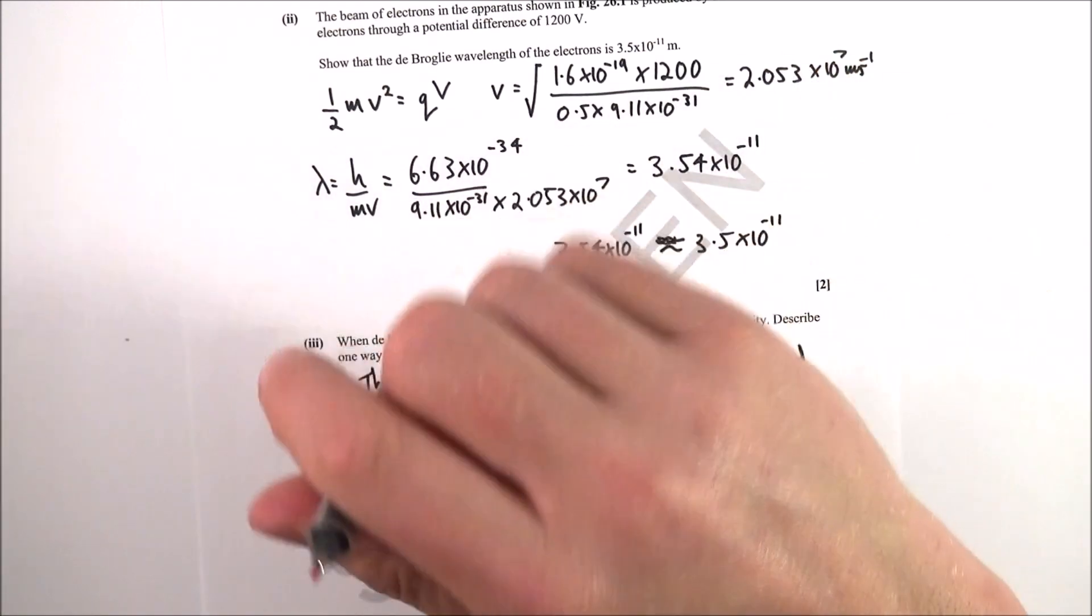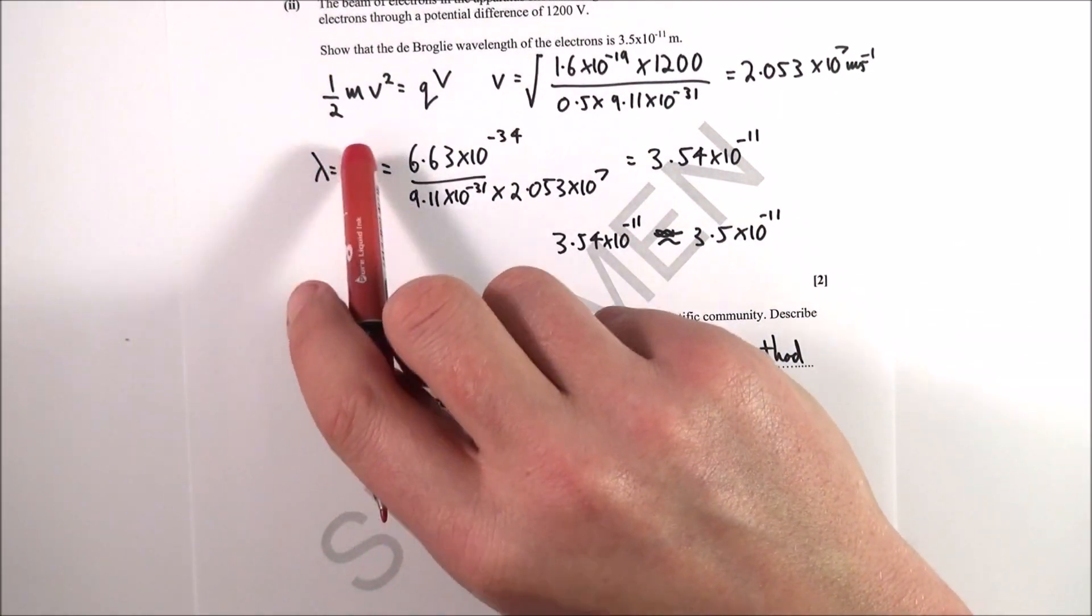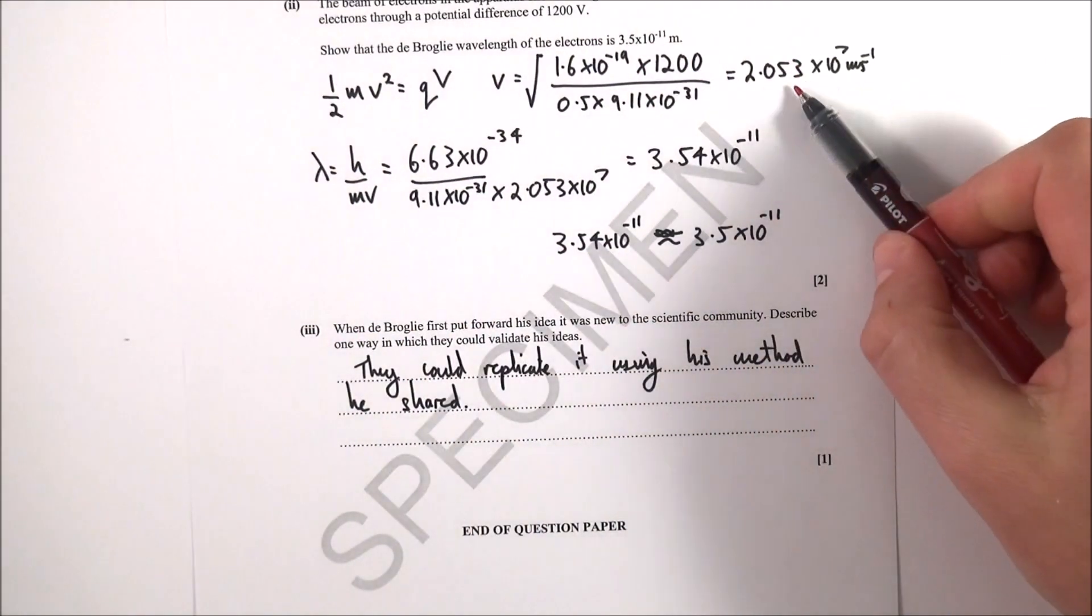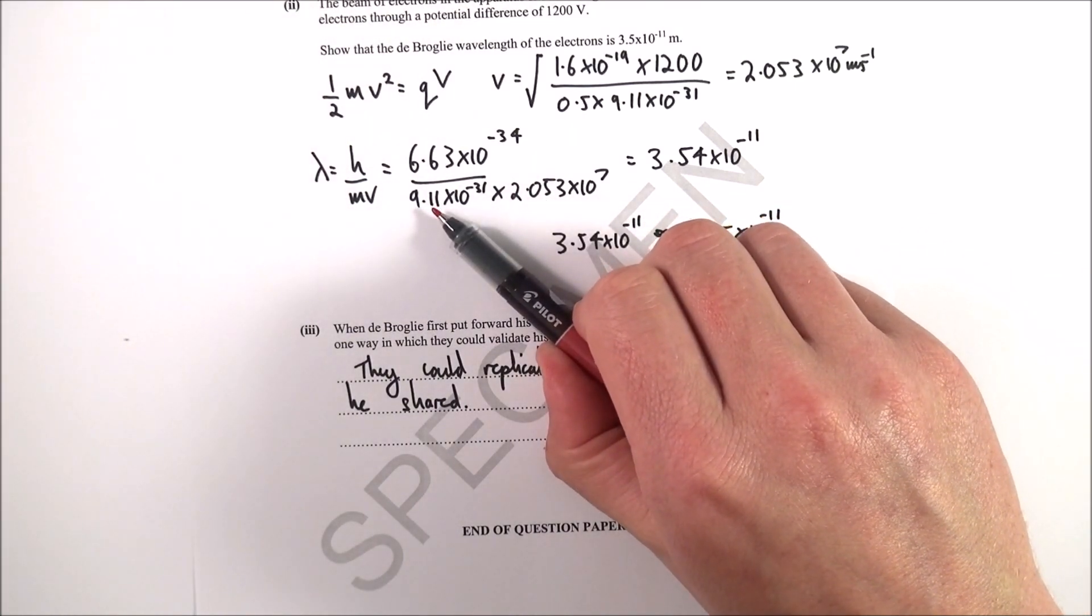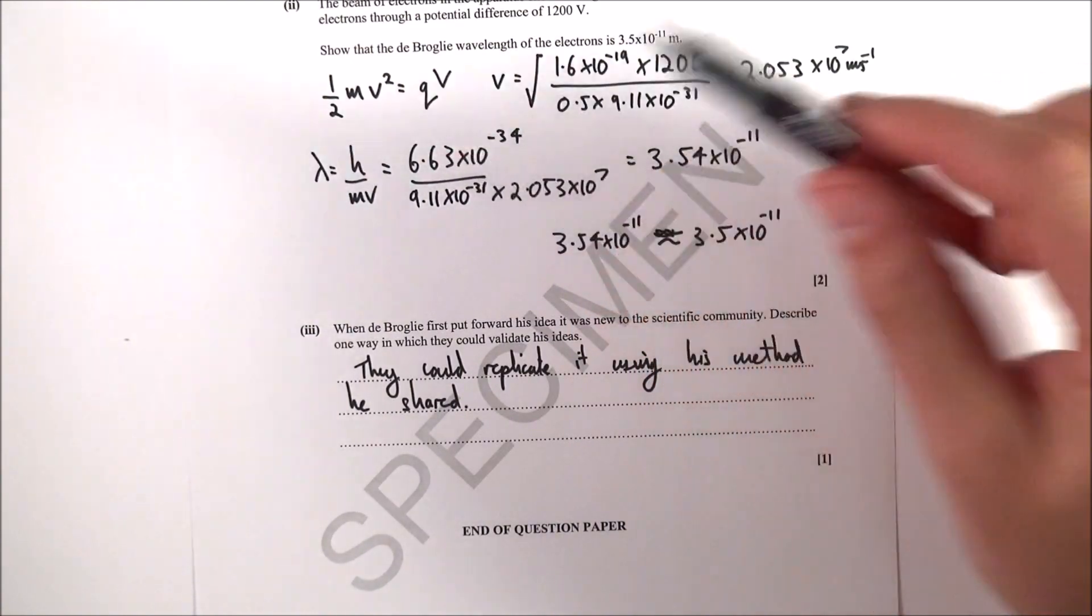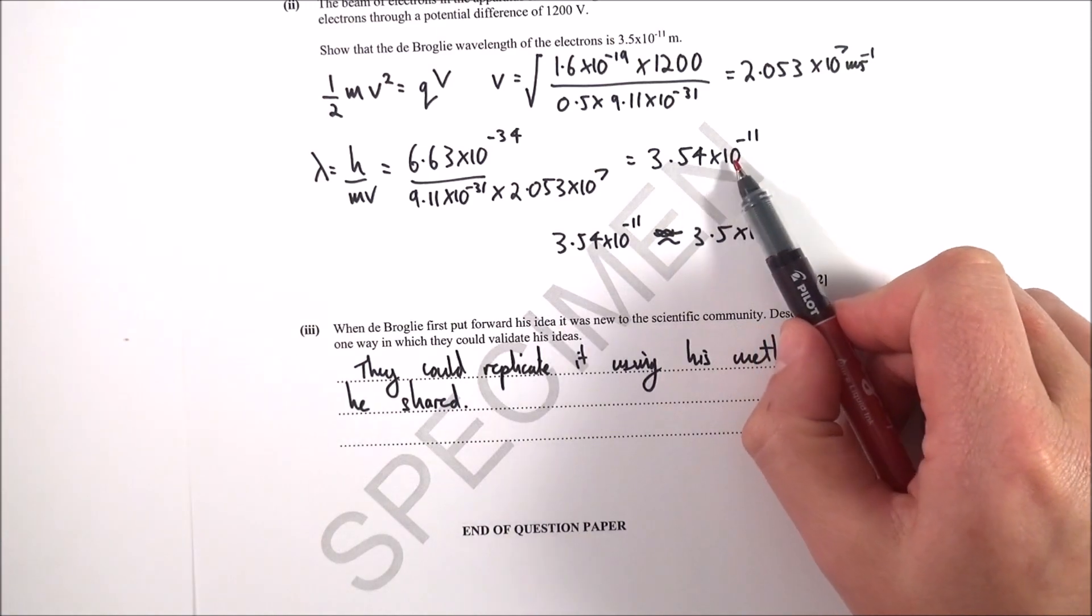We know the de Broglie wavelength λ equals h over mv—Planck's constant over the particle's momentum. I use the value of v from before, multiply by the mass of the electron (which is in your data book), and use Planck's constant. Put the numbers in and you get 3.54×10^-11.